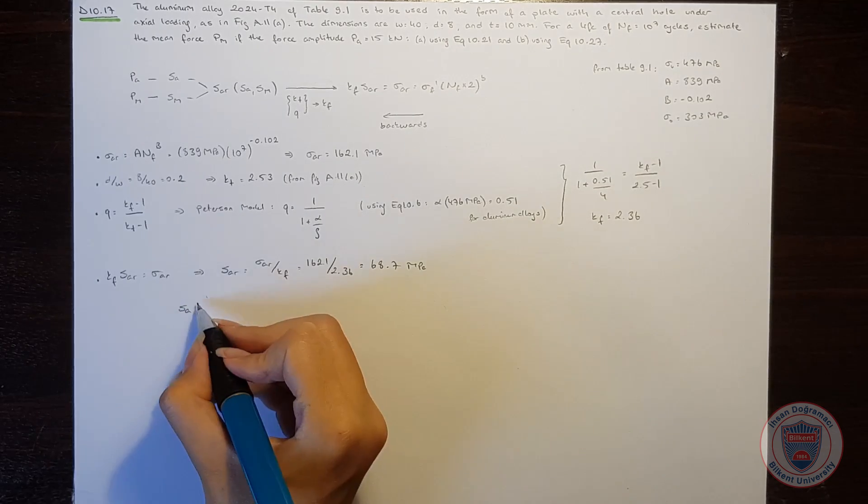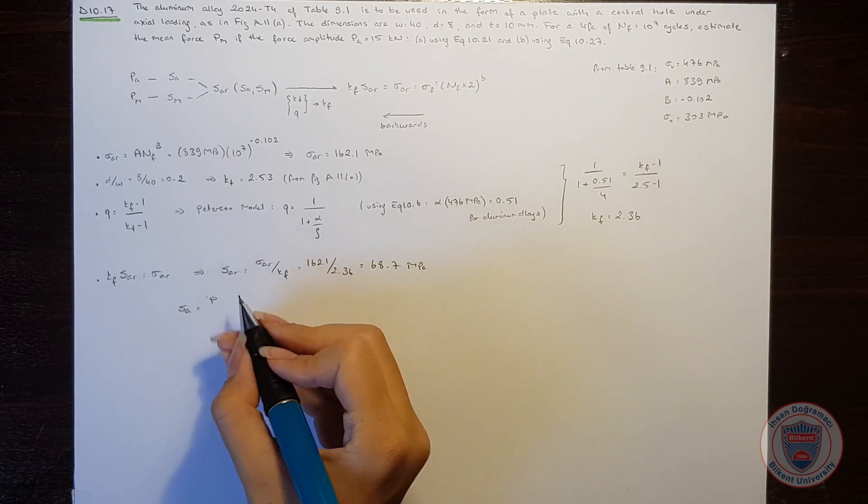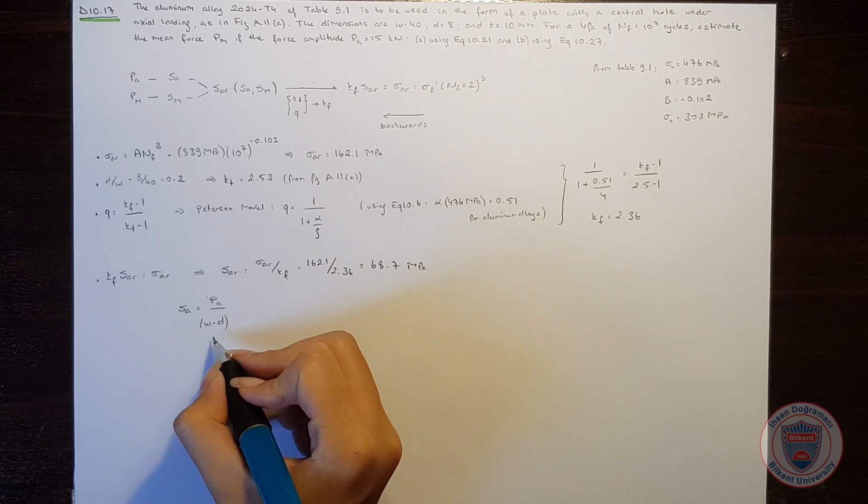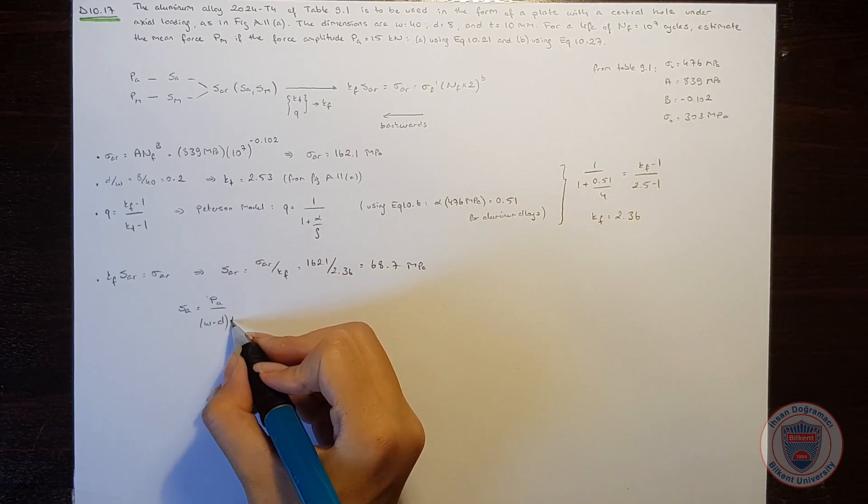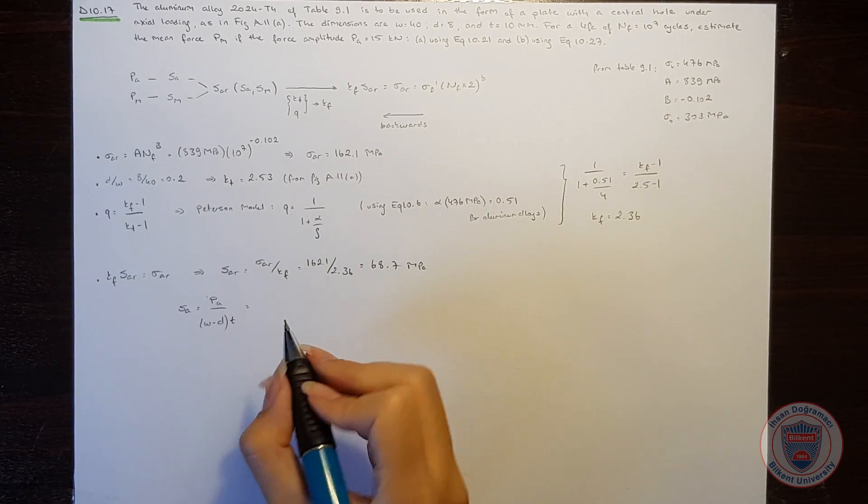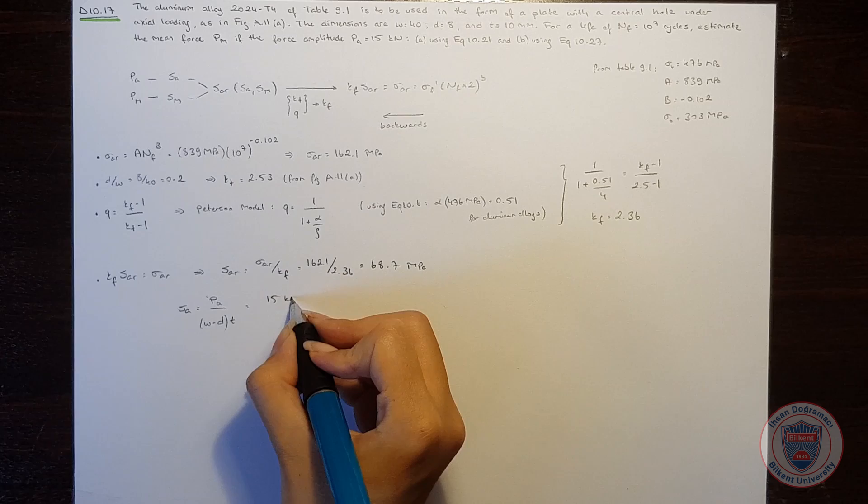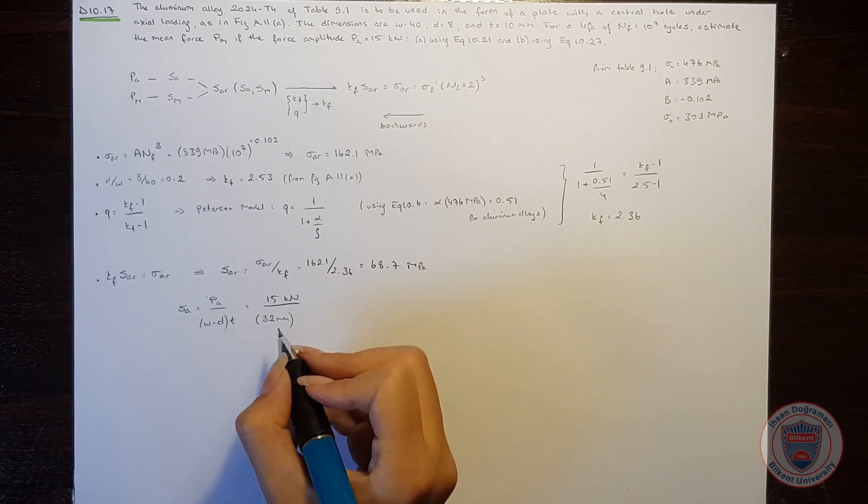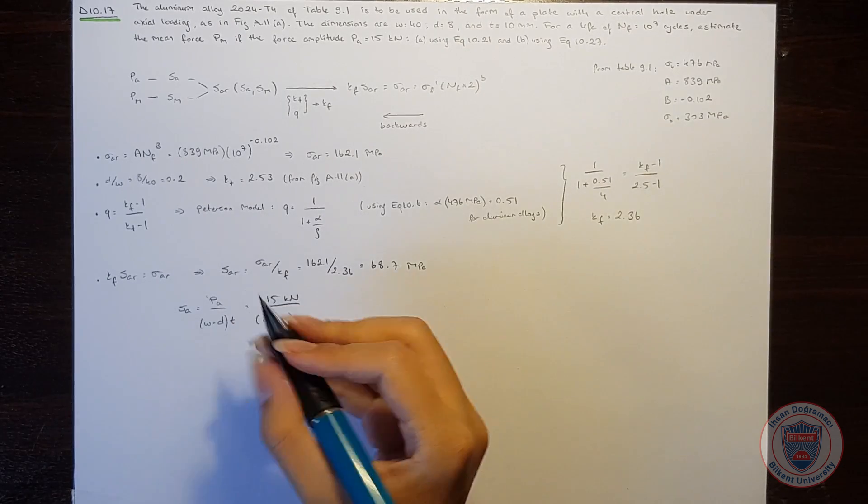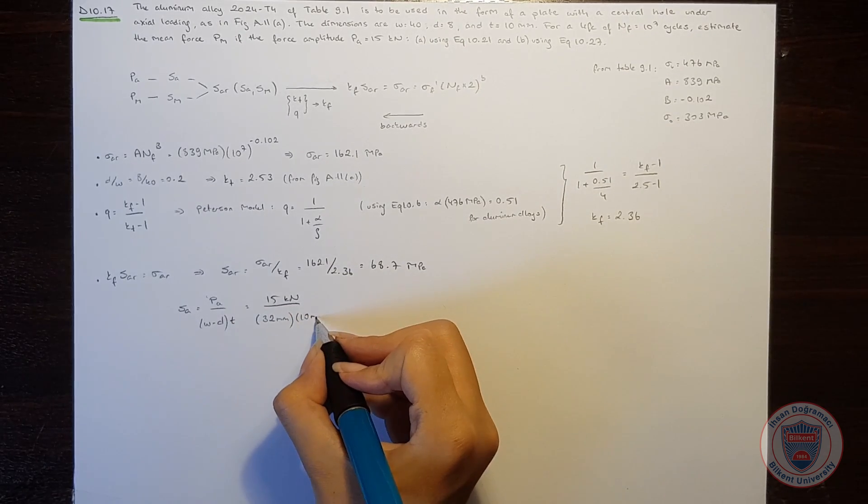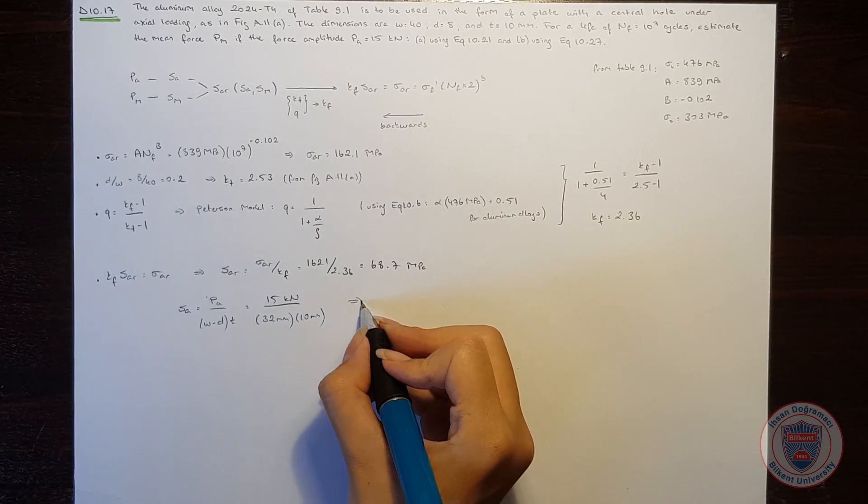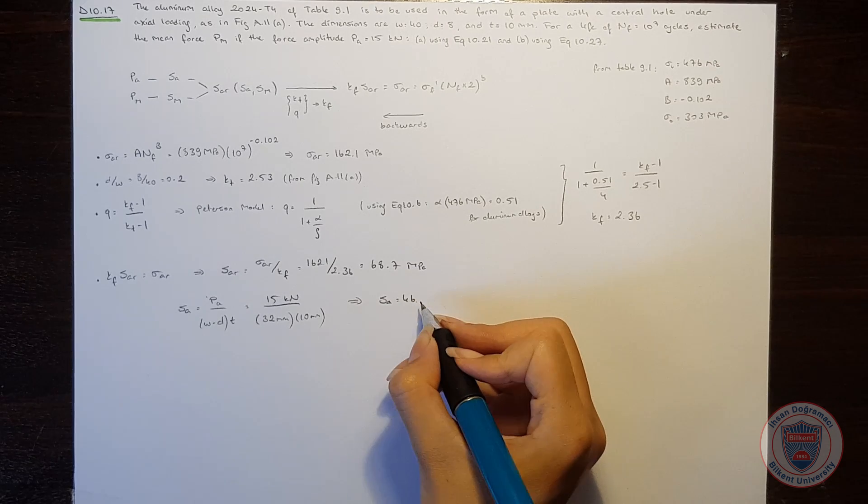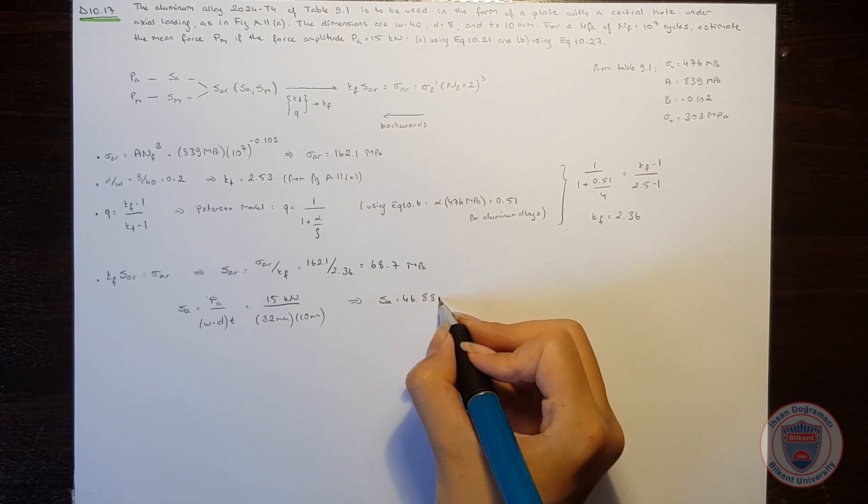We know that the normal stress amplitude will be equal to the force amplitude over W minus D times thickness. We know that PA is 15 kN. W minus D is 32 and the thickness is 10 mm. So that the normal stress amplitude becomes 46.88 MPa.